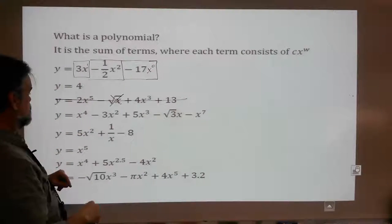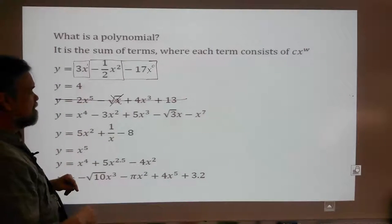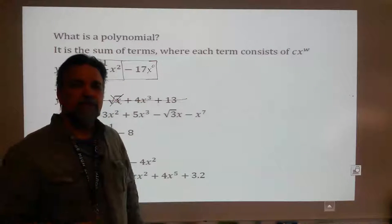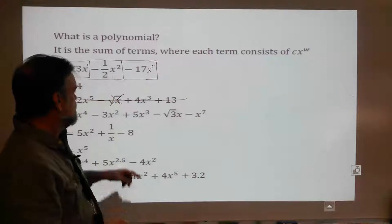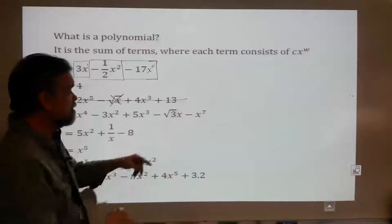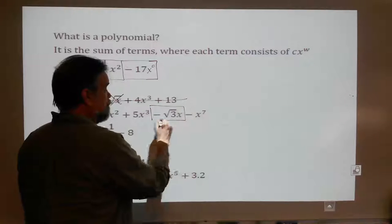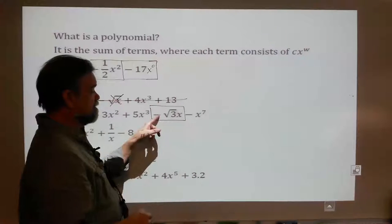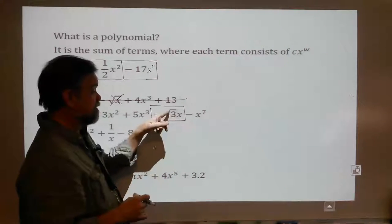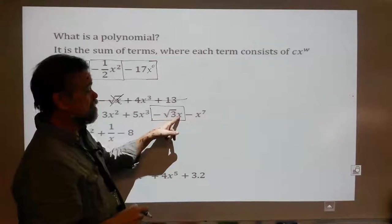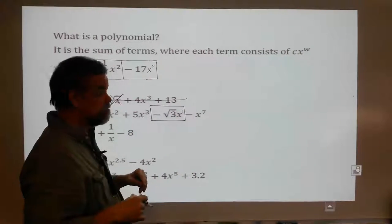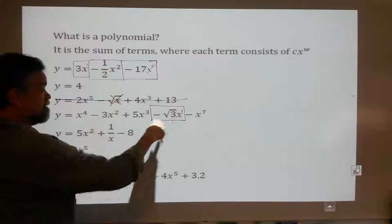Is this a polynomial? Yes, it is. You might be saying, hey, you just said no square roots. No, I didn't. I said you can't take the square root of x, but this coefficient — negative square root of 3 — is perfectly fine. Like I said, the coefficient has to be a real number. It is a real number. There's your variable to the 1 power. It's perfectly cool. So this is a polynomial.